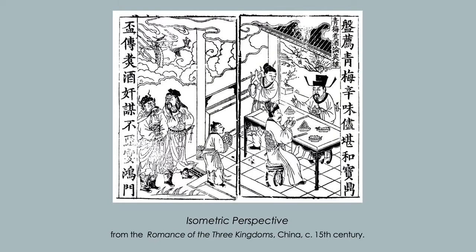Here is an example of isometric perspective in a traditional Japanese image, and here in a Chinese print. Notice the lines on the floor and the table do not converge — they do not get smaller and closer together as they go further away. By and large, their convention was more interested in addressing the reality of things rather than the way the eye responds to things.